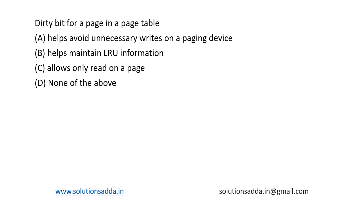This is a question from operating systems: dirty bit for a page table is used for. Four options are given: helps avoid unnecessary writes on a paging device, helps maintain LRU information, allows only read of a page, none of the above. Dirty bit is used to keep track of whether a page in cache has been modified or not.